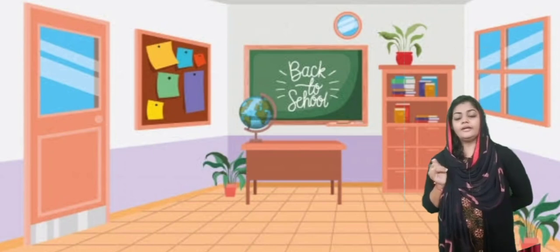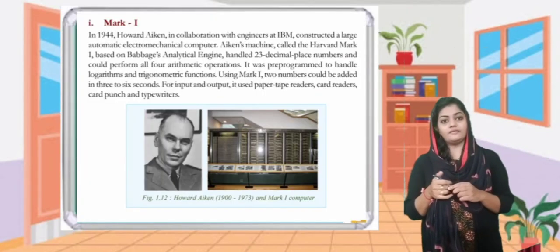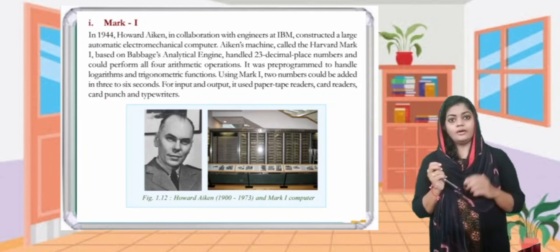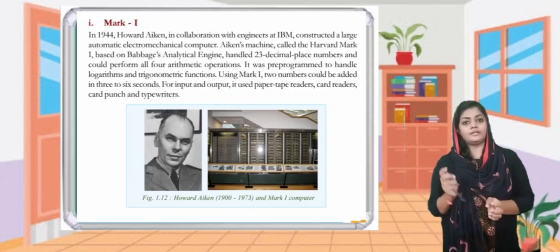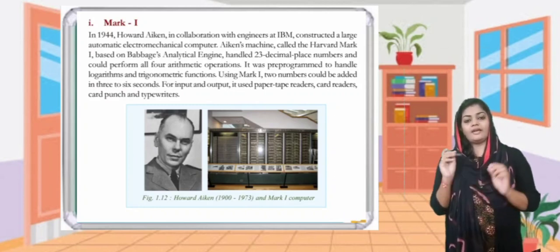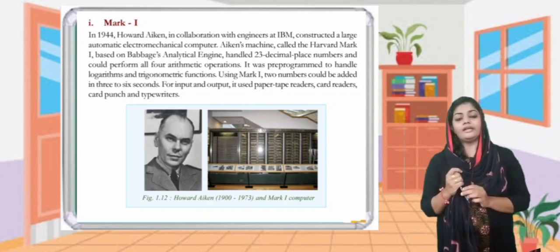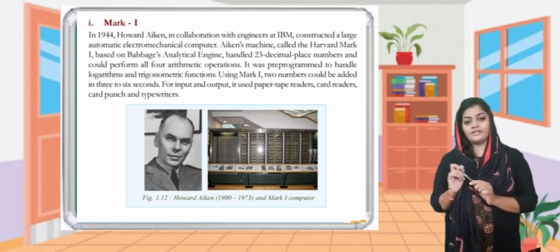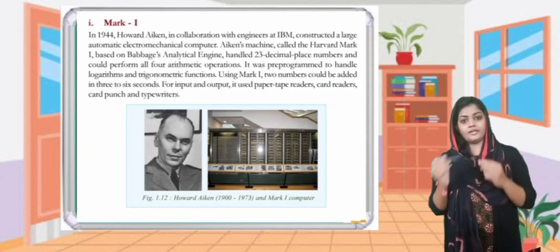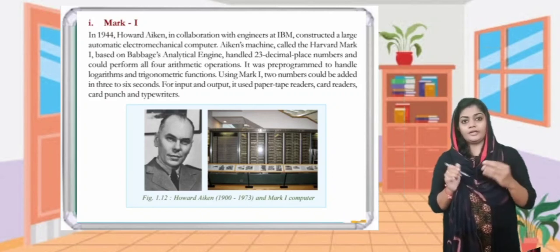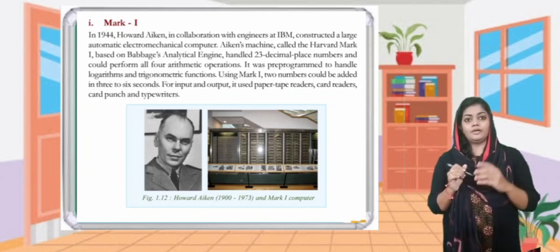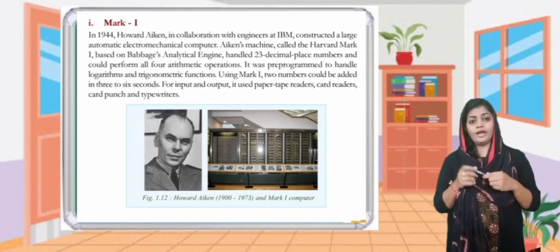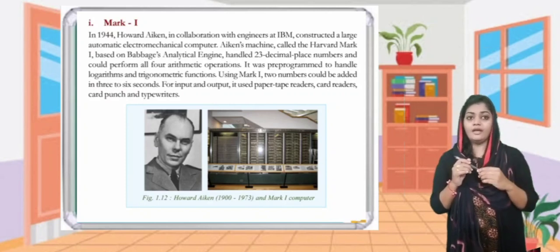Next: Mark 1. In 1944, Howard Aiken, in collaboration with engineers at IBM, constructed an automatic electromechanical computer. Aiken's machine, called the Harvard Mark 1, was based on Babbage's Analytical Engine. It could handle 23 decimal place numbers and could perform all four arithmetic operations.